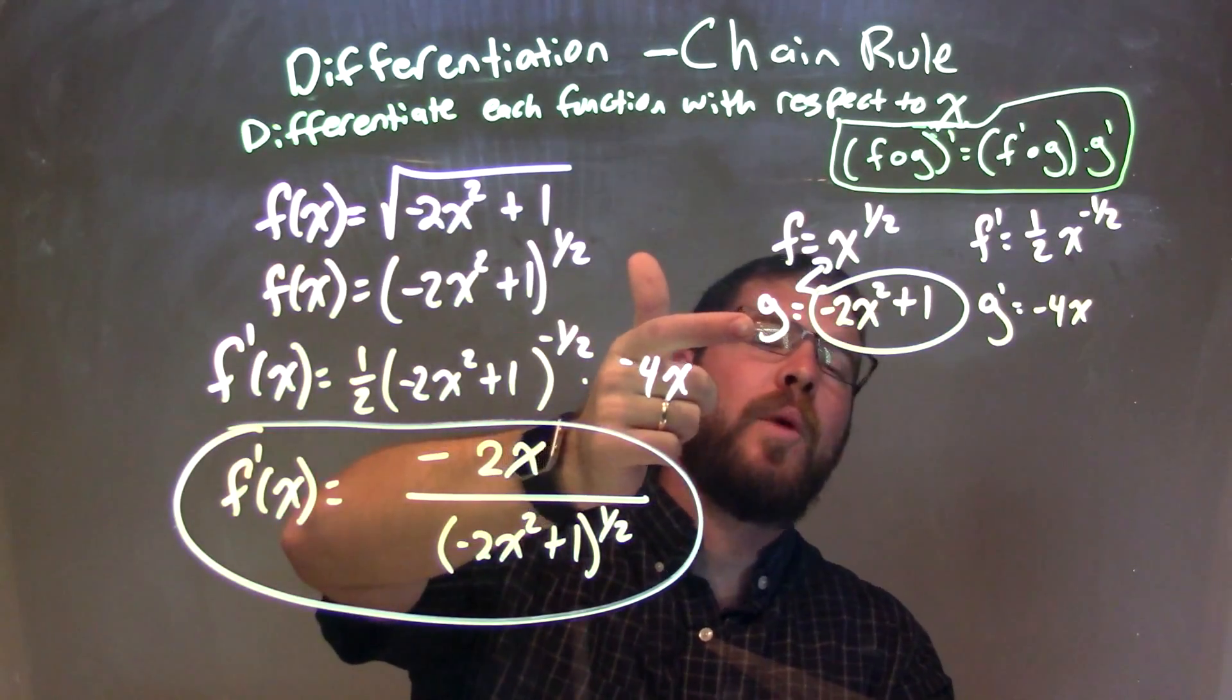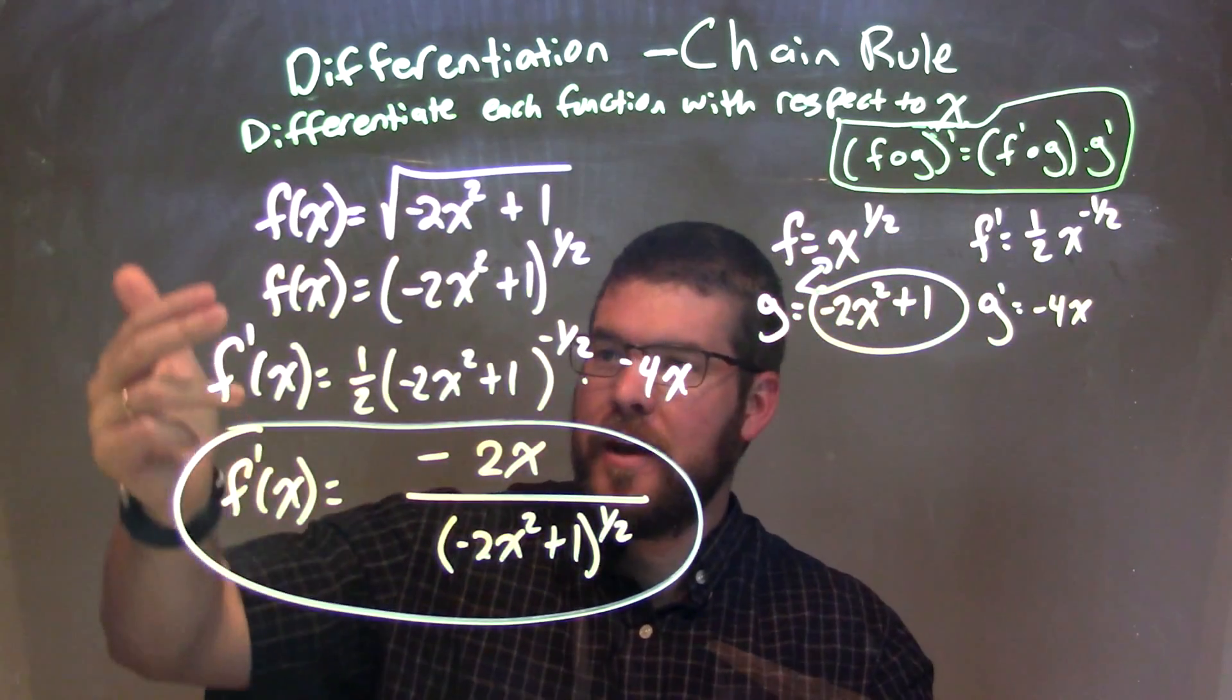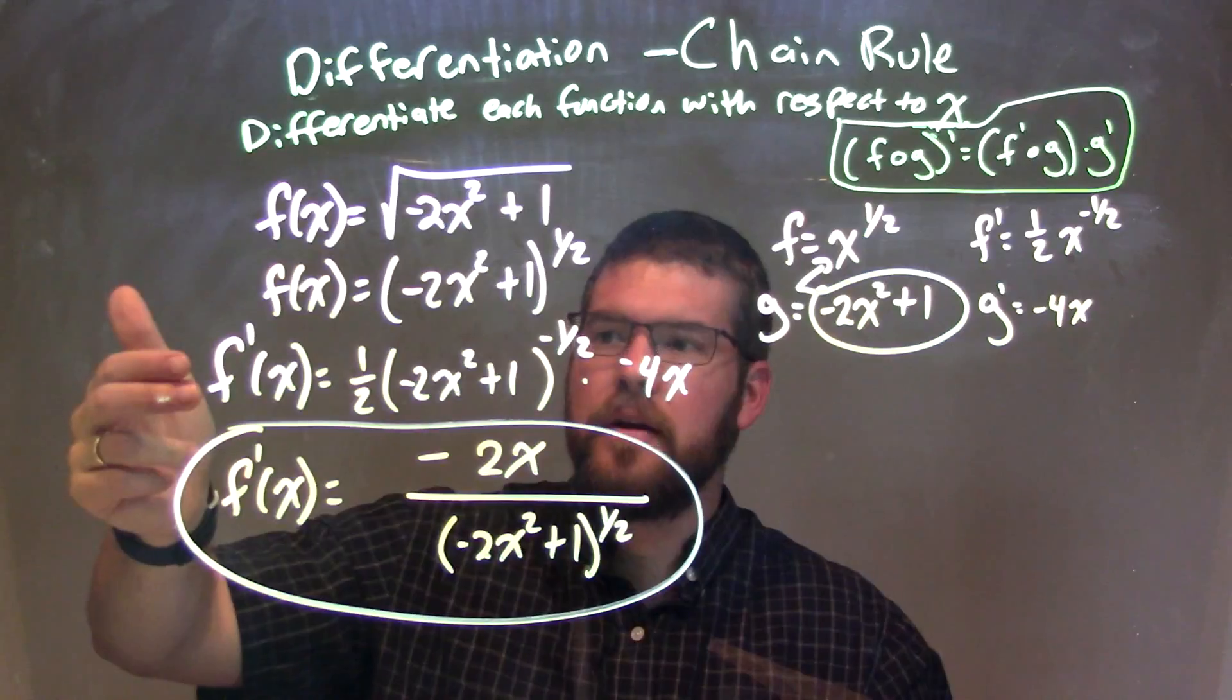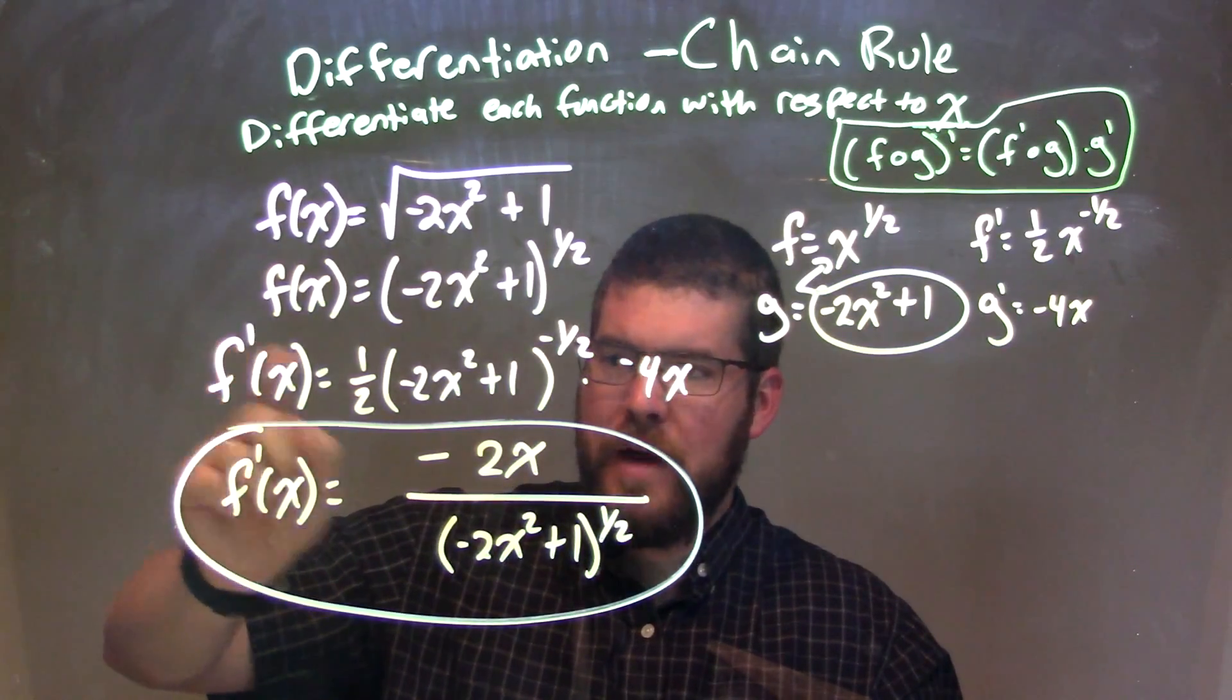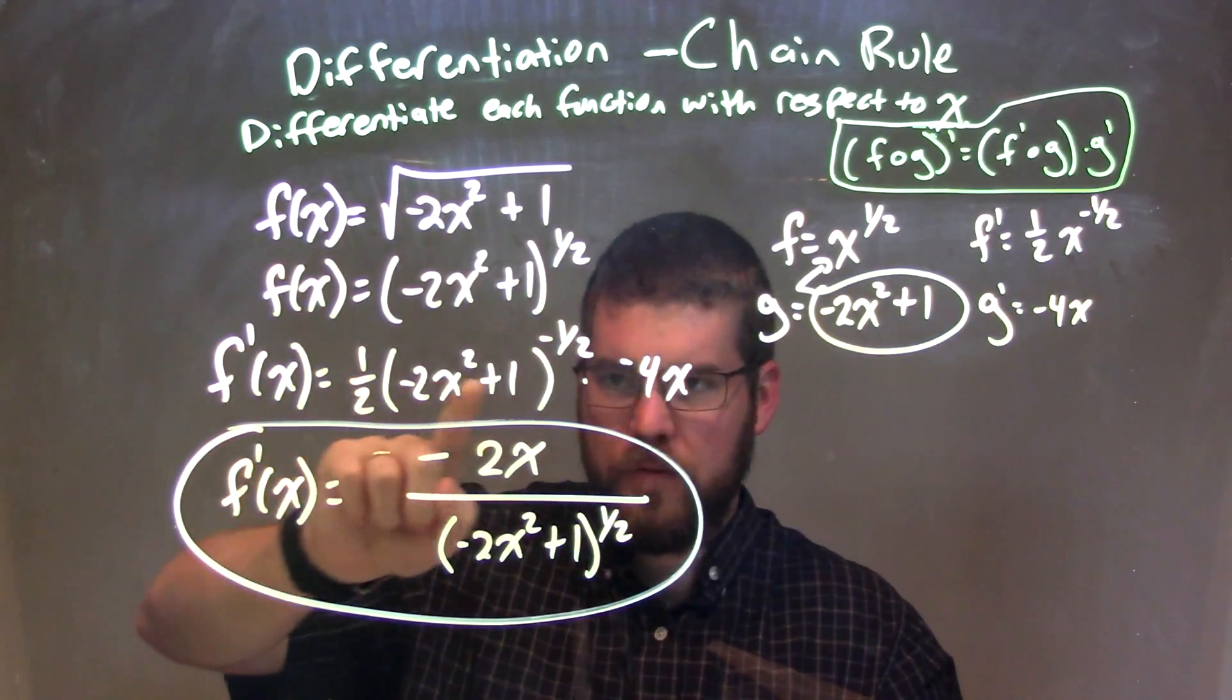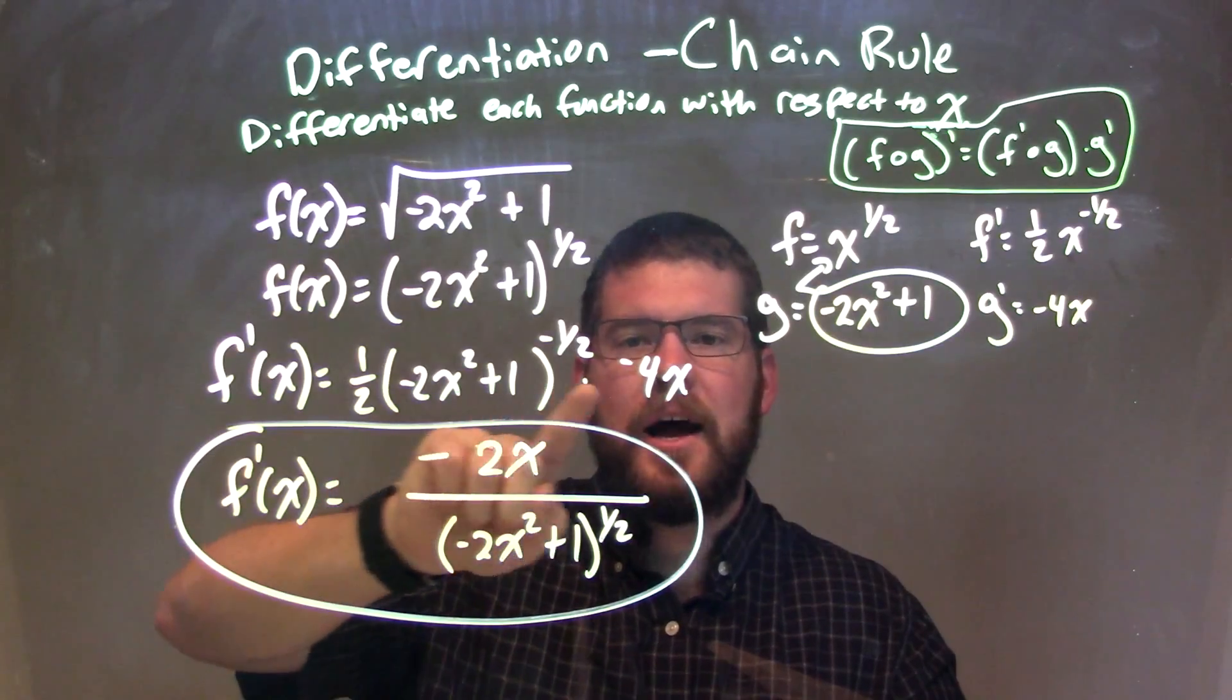I then found my f of g as well as my f prime and g prime. I then applied calculus and used the chain rule here to find f prime of x to get f prime of g times g prime.